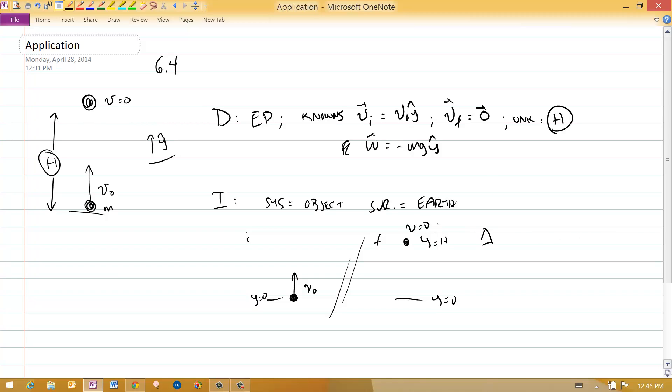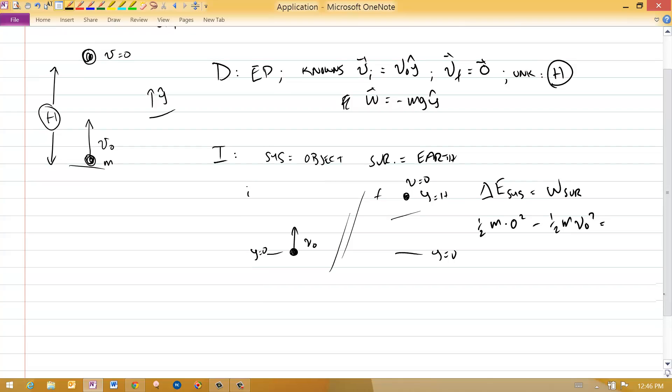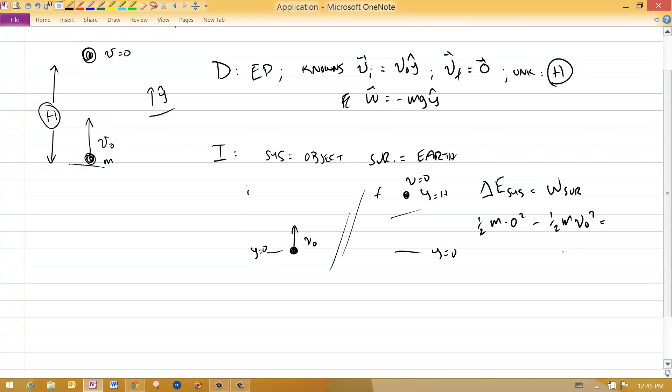The Energy Principle will say, for this system, the change in the energy of the system is equal to the work that's done by the surroundings. I can read off from the states here, what is the change in the energy? The final energy is given in this state, 1 half m times 0 squared, because it's at rest, and I subtract the initial energy, 1 half m v0 squared, and that is going to be equal to the work from the surroundings. The work from the surroundings is a dot product of two vectors.